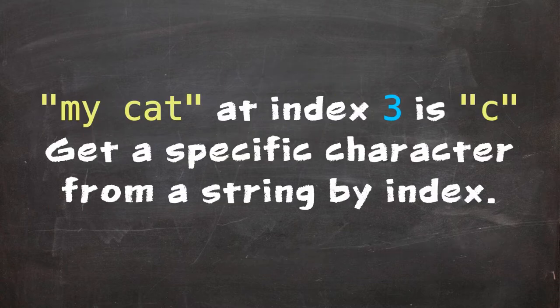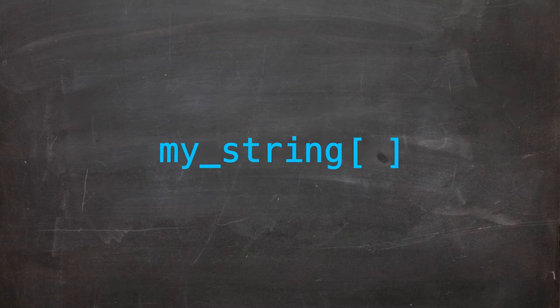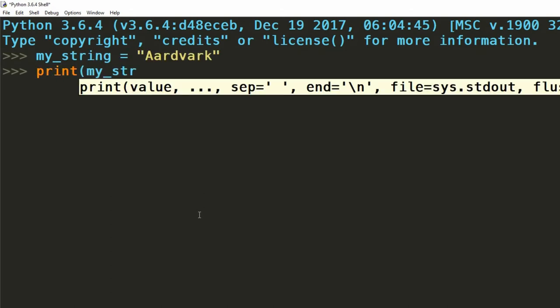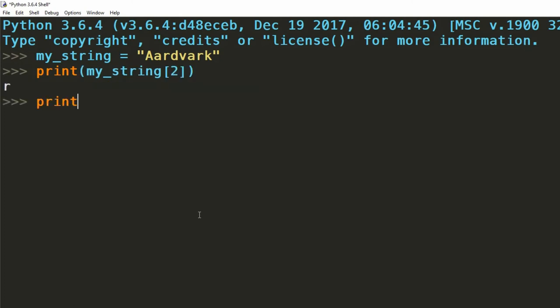Whilst we're on the topic of indexing we're able to get the character of a string at a particular index. This is achieved by following the string with a pair of square brackets the index of the character you want to return placed between these brackets. If we wanted the third character in the word aardvark we'd place a two between these brackets. If we wanted the first character we'd place a zero between these brackets.